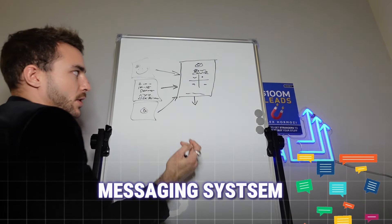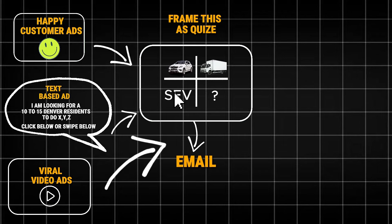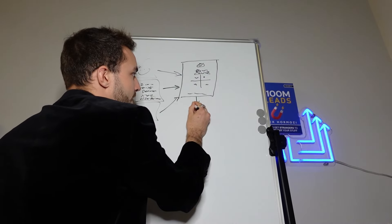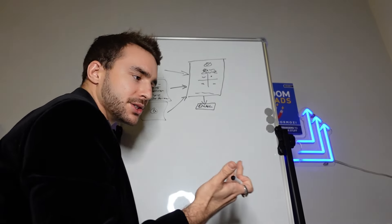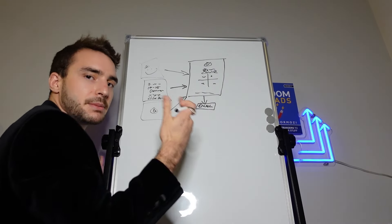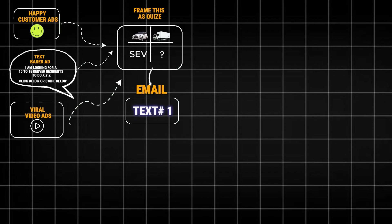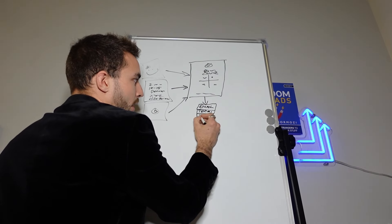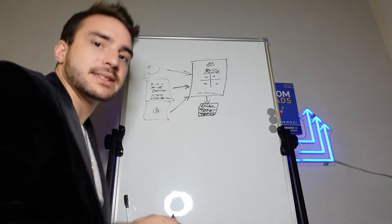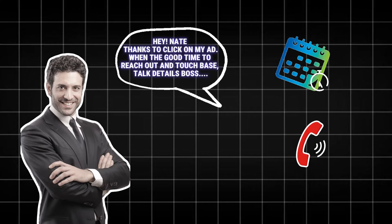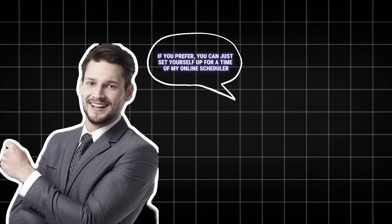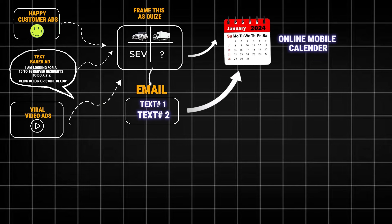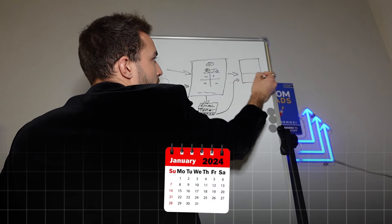Once they fill out the quiz, we start an automated email and text messaging system. First goes the 'brochure email' — that gives all the welcome information and clarifies the offer, sent immediately when they inquire. Then we send Text 1: 'Hey [name], thanks for clicking on my ad — when's a good time to reach out and touch base on the details?' Then Text 2, about 20 seconds later, says: 'Or if you prefer, you can just set yourself up for a time with my online scheduler' — and we send them the scheduling link to our online calendar.